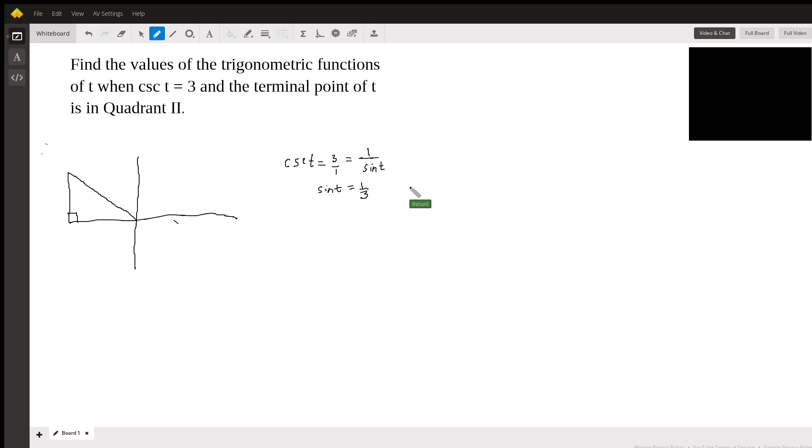Then you have to remember your SOHCAHTOA. Sine is opposite over hypotenuse. So the opposite is one, the hypotenuse is three. Now once we have this, this is our angle t. Once we have this, we can come up with all the trigonometric functions for this angle.